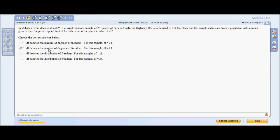Number 11: In statistics what does DF denote if a simple random sample of 24 speeds of cars on California Highway 405 is to be used to test the claim that the sample values are from a population with a mean greater than the posted speed limit of 65 miles per hour? Well in statistics DF are degrees of freedom, and it is always one less than the sample. So whatever your sample is, subtract one, and there's your answer.